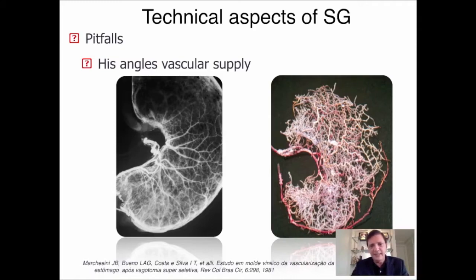— a mold of the stomach that can clearly show us that the vessels from the stomach, the arterial ones, the venous ones, they perfectly match left to right,